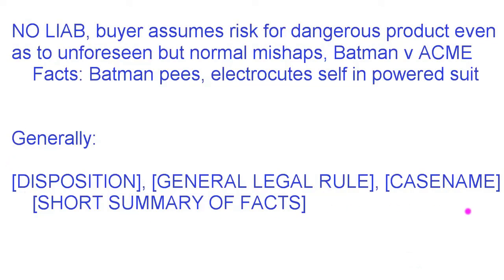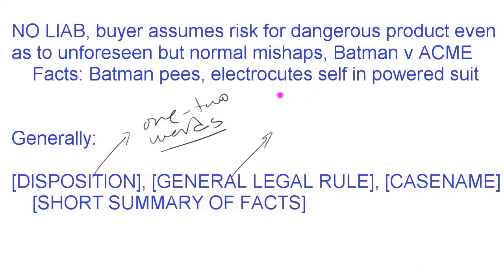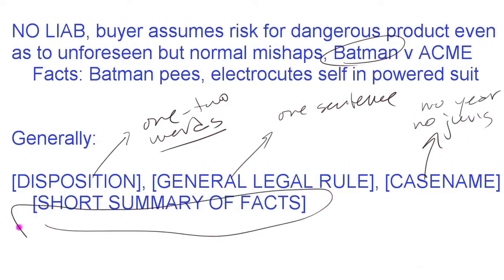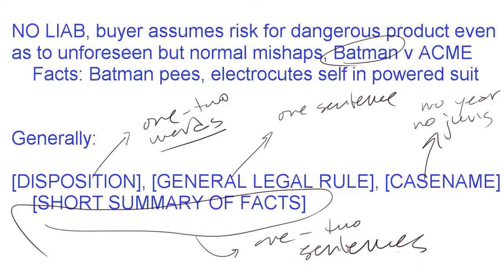So let's review. This is the algorithm for adding a case to an outline. First: disposition — one or two words, nothing more. Second: generalizable legal rule — one sentence. Third: case name — you might even just put 'Batman' if there are no other Batman cases, and you don't need jurisdiction or year. Fourth: a short summary of the facts — one to two sentences. This is how you outline. The next step is learning how to fit these into a coherent outline, but that's for parts two, three, four, five, or however many I come up with.